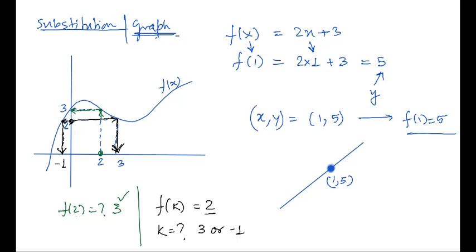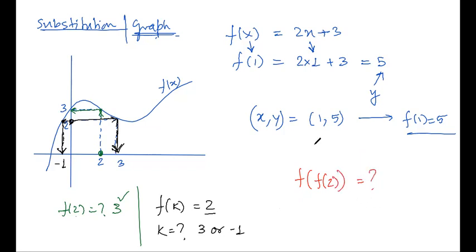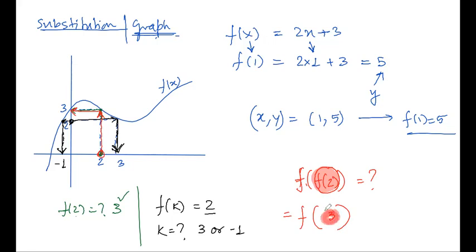For f(f(2)): start from the innermost part. First find f(2) equals 3 from the graph. Then find f(3): go to x equals 3 on the graph and read y equals 2. So f(f(2)) equals 2.